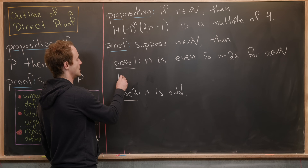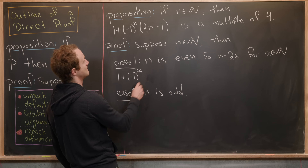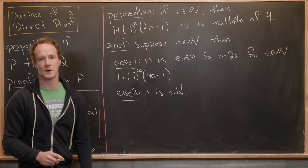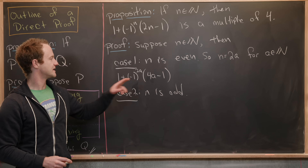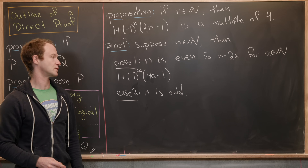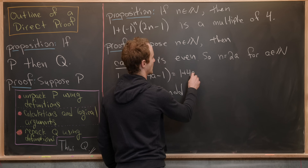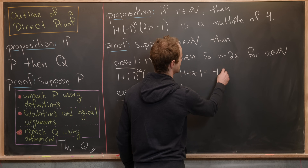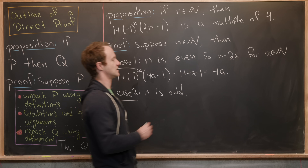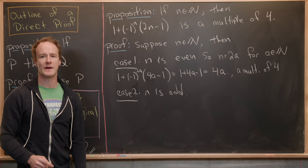We plug in N = 2a and get 1 + (−1)^(2a) × (4a − 1). Notice (−1)^(2a) = +1, so this gives us 1 + 4a − 1, which equals 4a — a multiple of four.